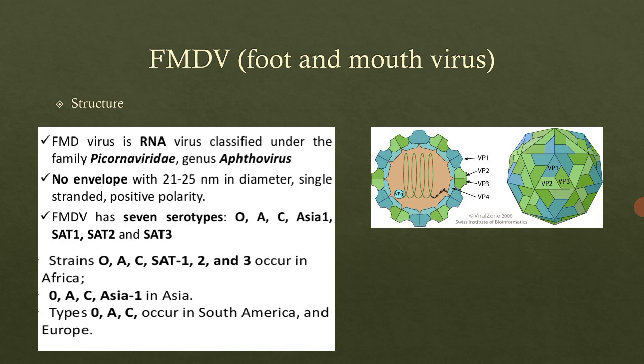FMDV has seven serotypes named O, A, C, Asia-1, SAT-1, SAT-2, and SAT-3. Strains O, A, C, SAT-1, SAT-2, and SAT-3 occur in Africa. O, A, C, and Asia-1 occur in Asia — which is why that serotype is named Asia. Types O, A, and C also occur in South America and Europe.